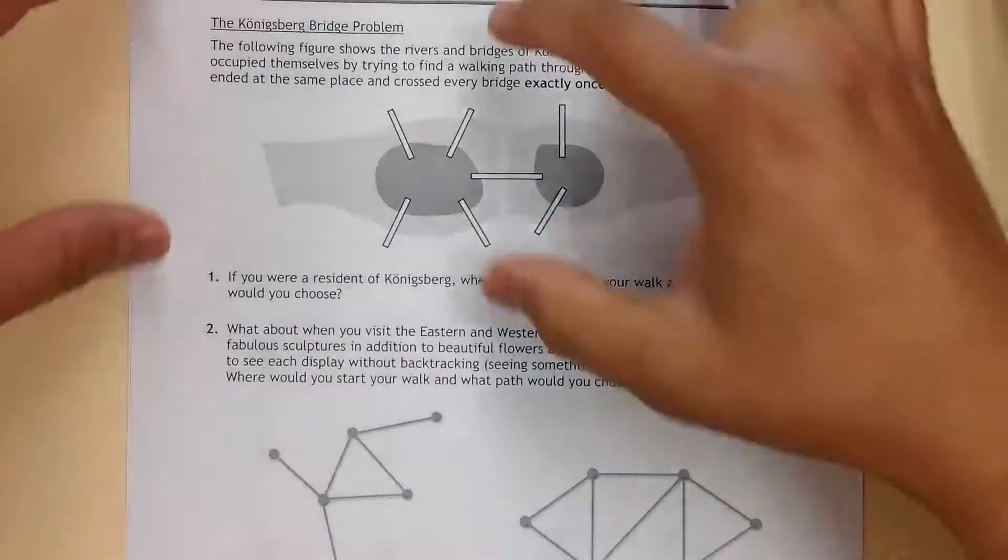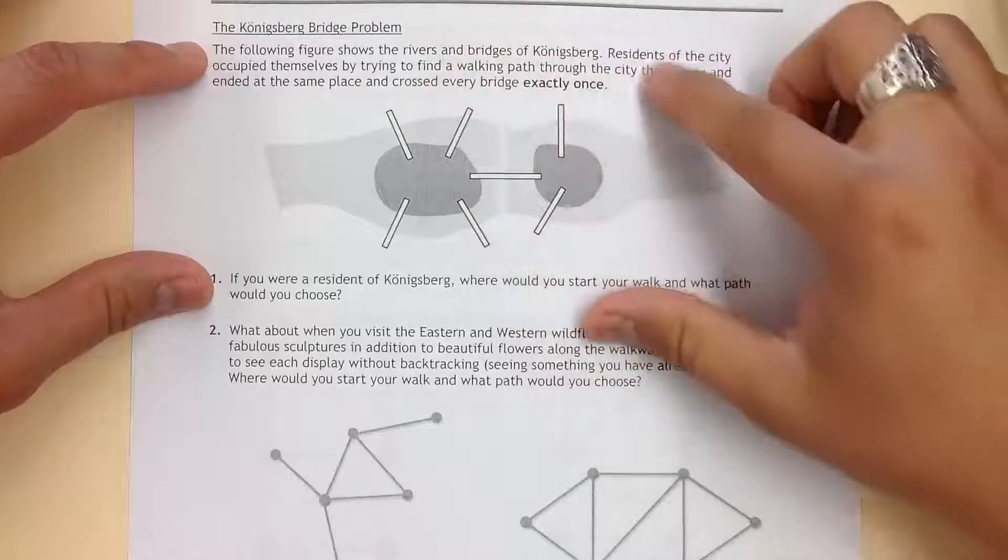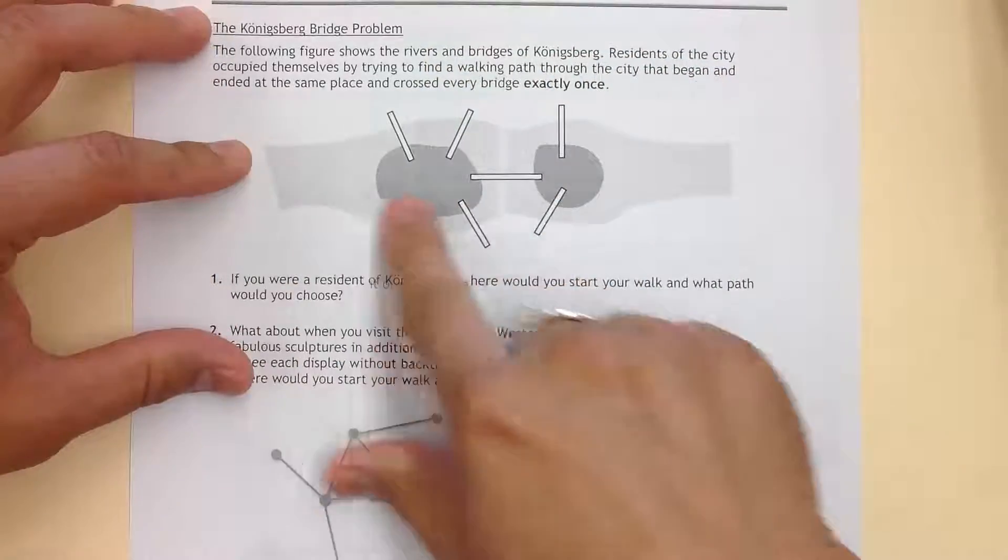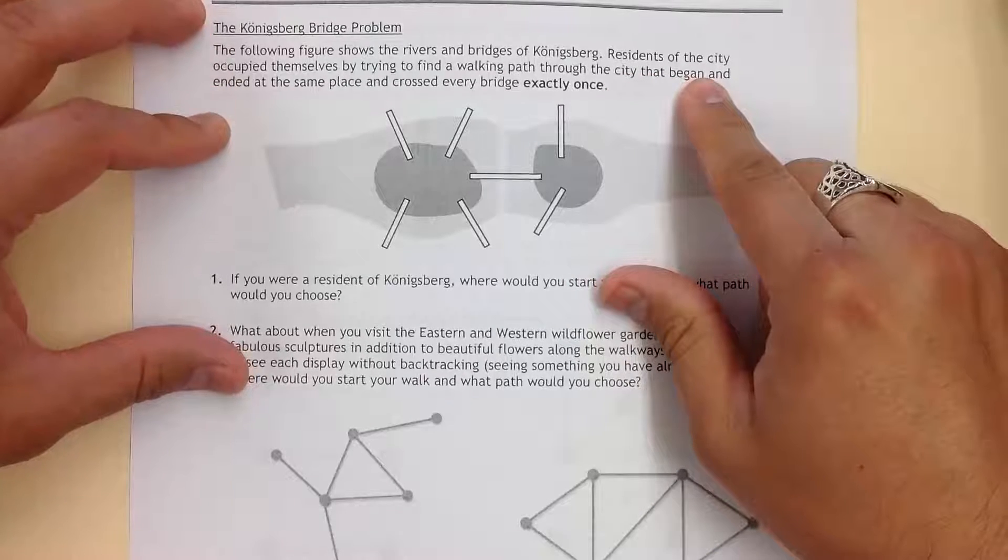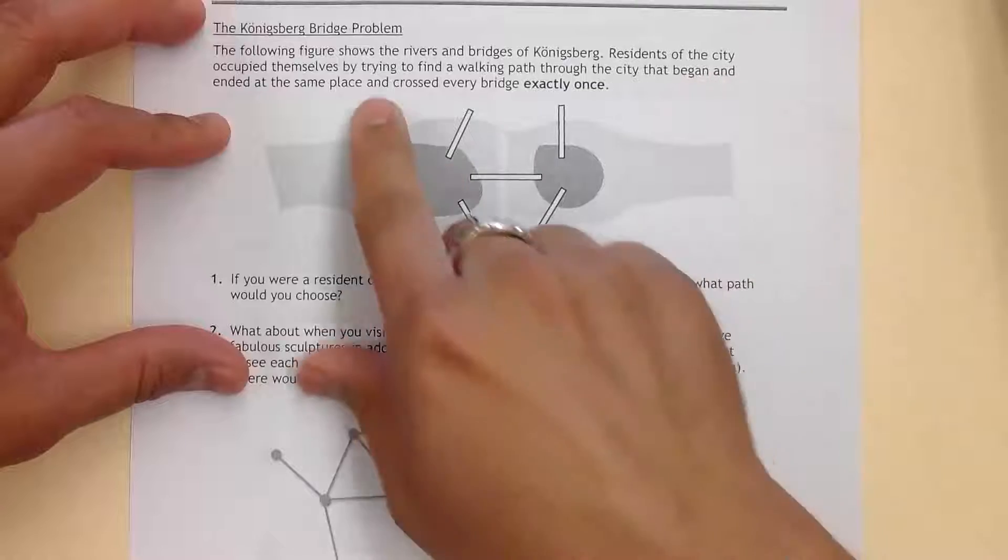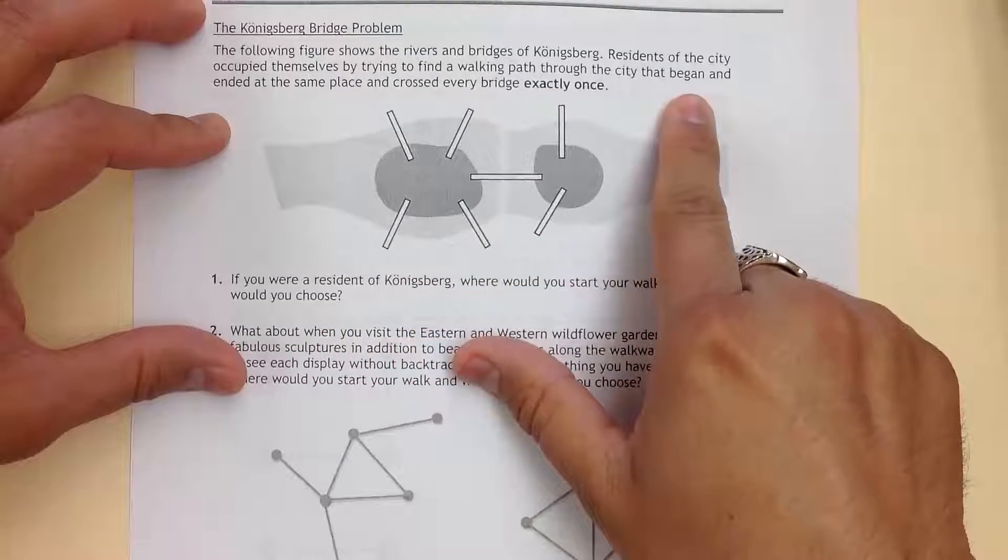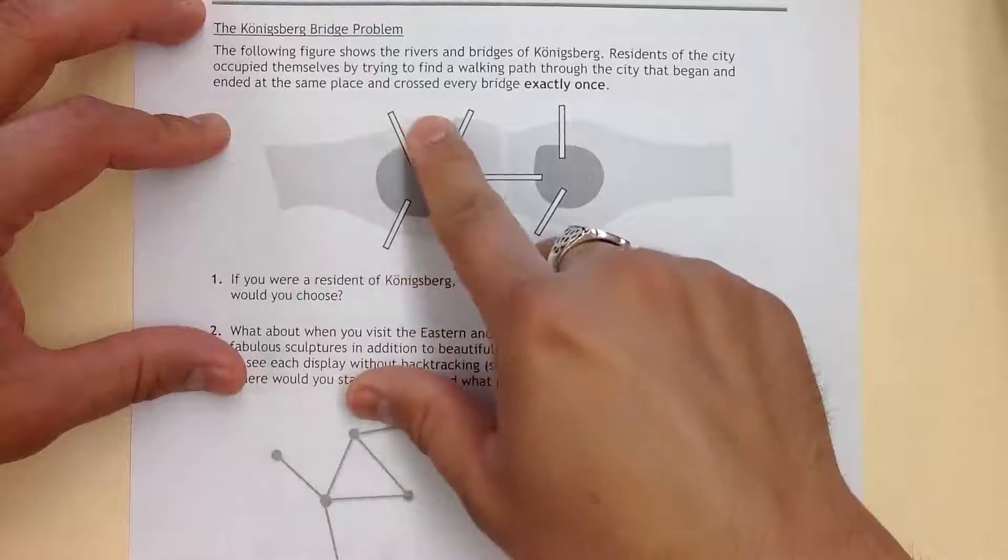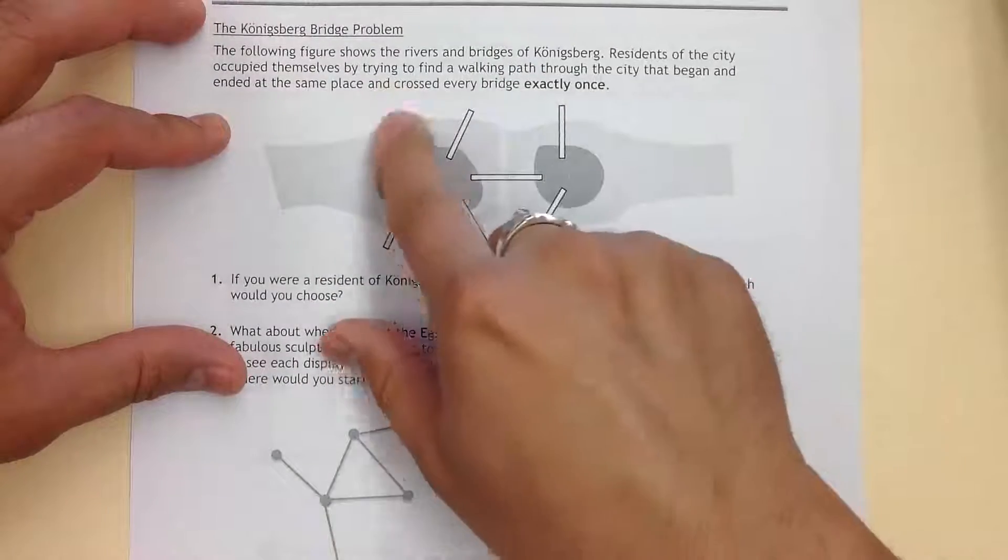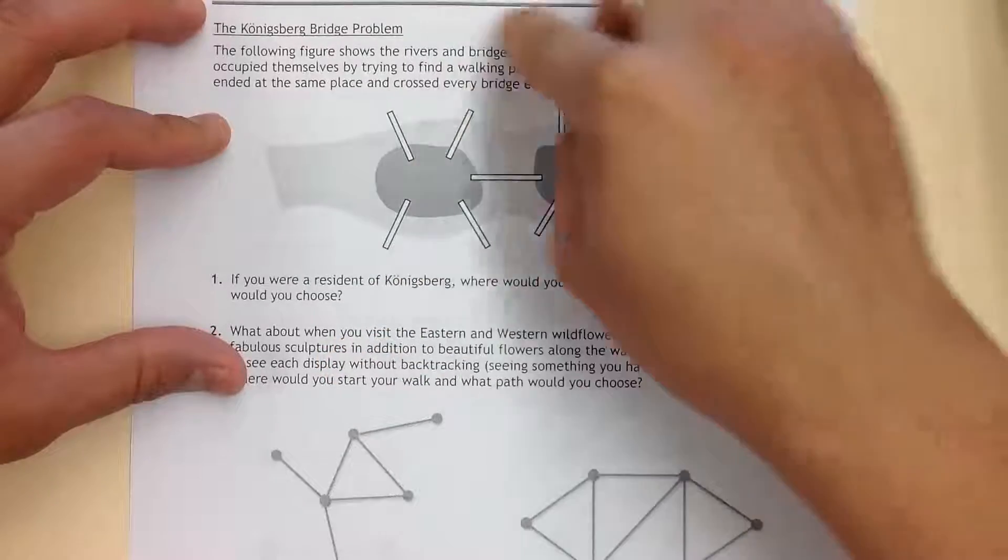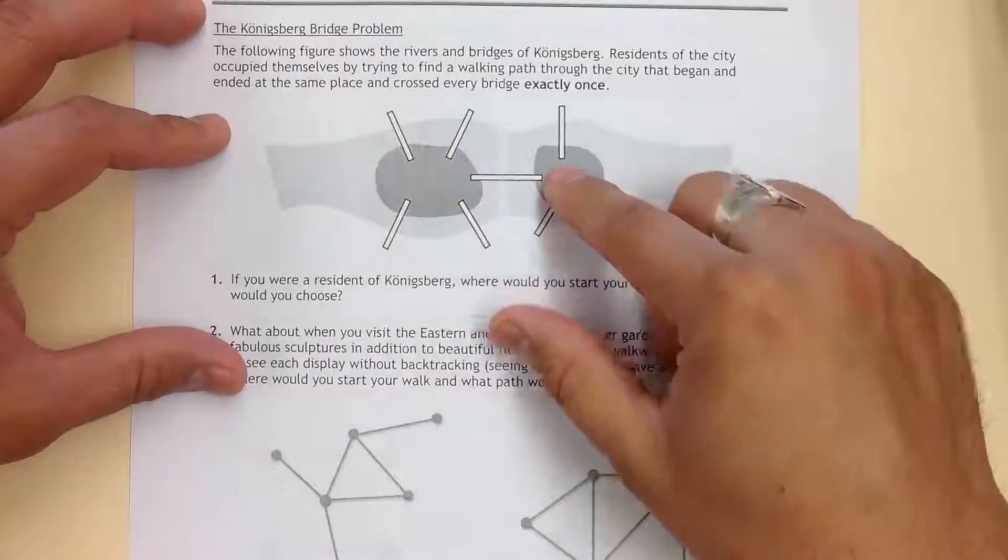Now here's a problem, the Konigsberg Bridge Problem. The following figure shows the river and bridges. The city has a river going around two little islands, and the residents occupied themselves by trying to find a walking path through the city that began and ended in the same place and crossed every bridge exactly once. Once they cross this bridge, they can't go back over it. The north shore and south shore count as positions, then we have the two islands.